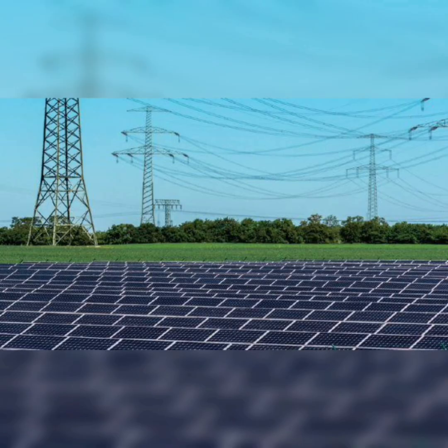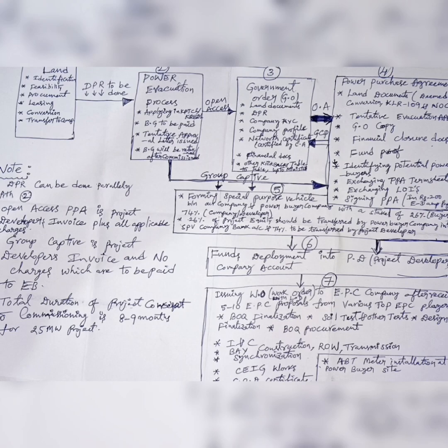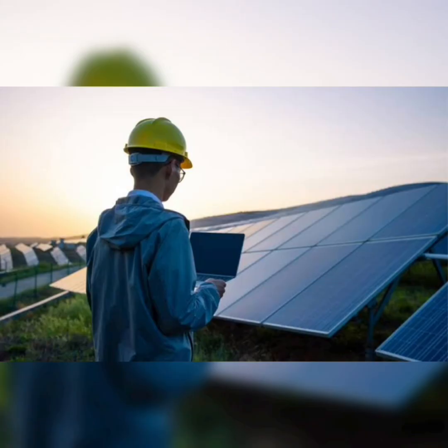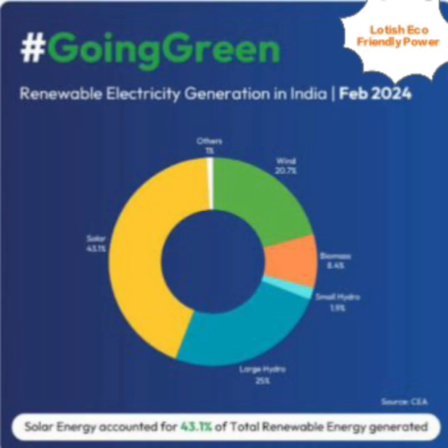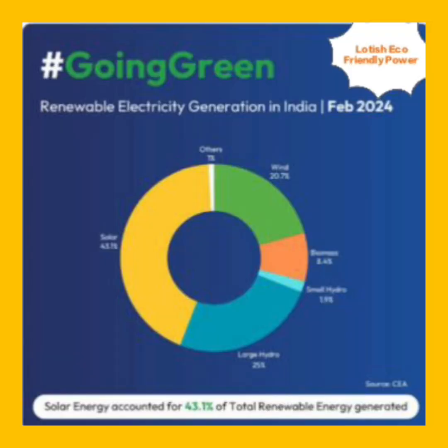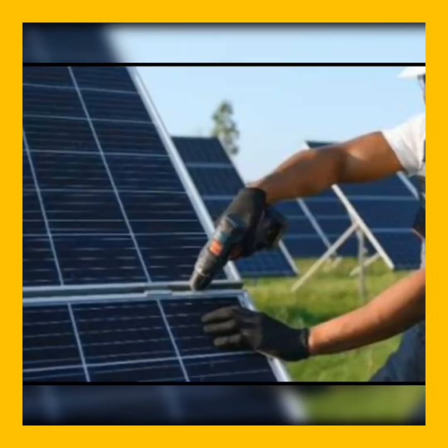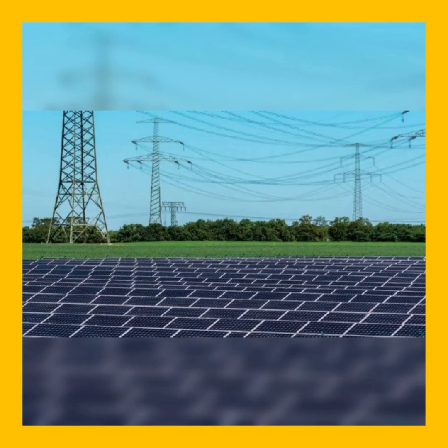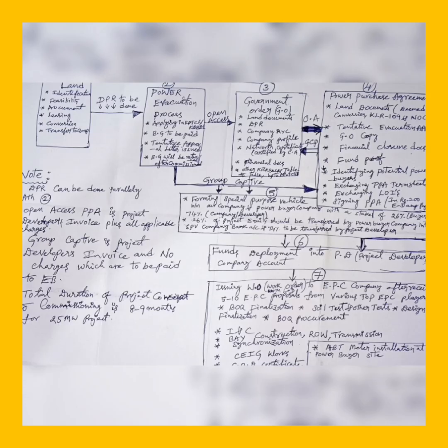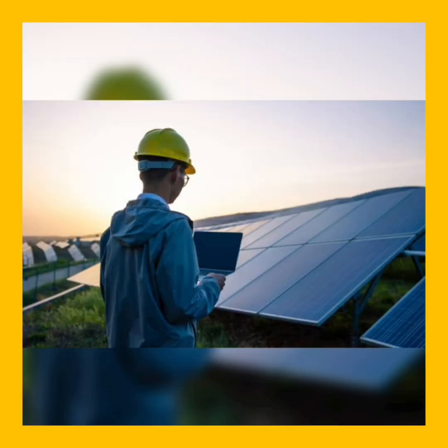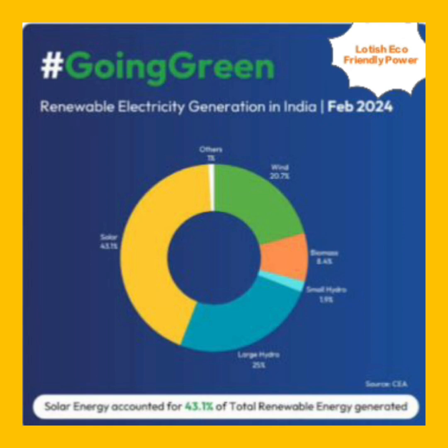In the SPV, equity can be transferred by both the power consumer and the power generator, as shown in the flowchart. After that comes funds deployment — funds procurement and financial closure. Phase 7 is the work order to the EPC company, that is the Engineering, Procurement, and Commissioning company.